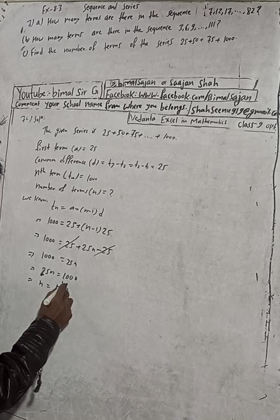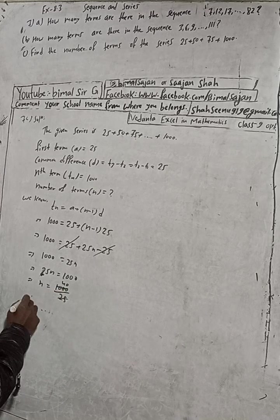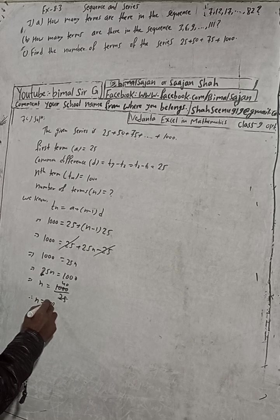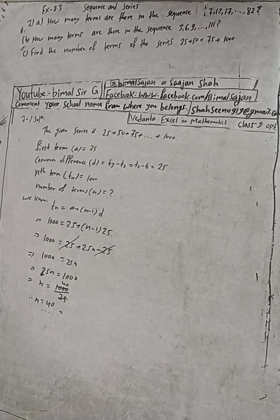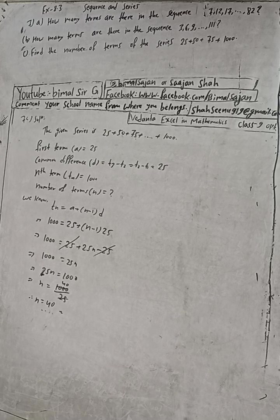So 25 times 4 is 100, so this will be 40. Therefore n is equal to 40. So dear subscribers and viewers, this is the solution for 7a, b, and c.